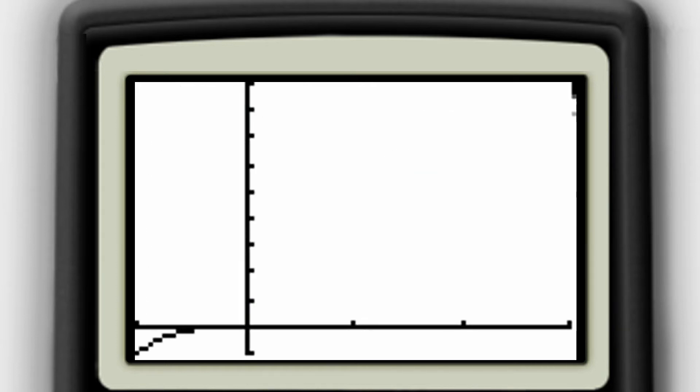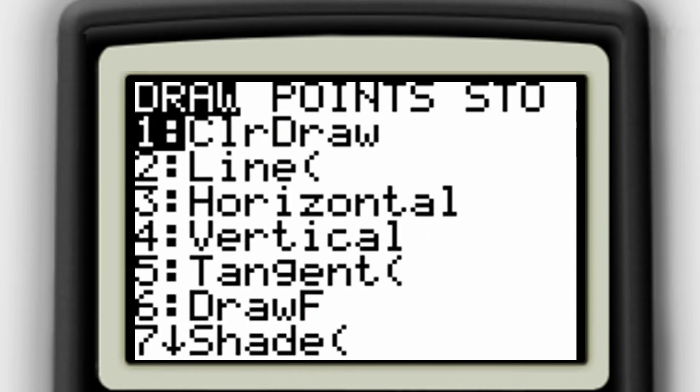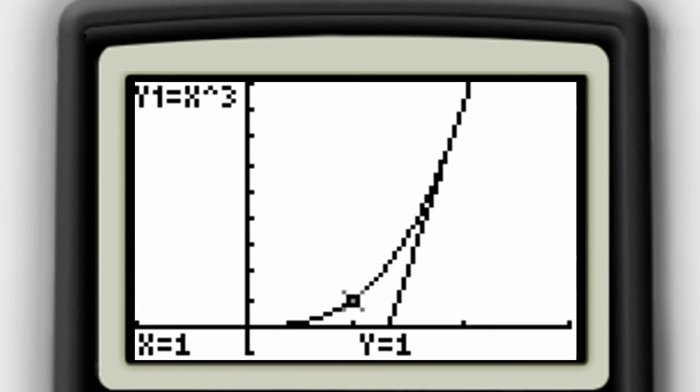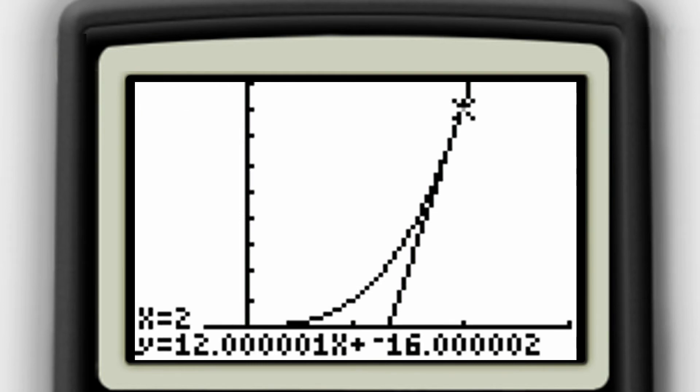Many graphing utilities also have a feature where you can draw in a tangent line. So if your utility has that feature, you can draw the tangent line at the point x equals 2. And when you do that, you'll notice that the tangent line is drawn, is going right on top of, or being drawn right on top of, 12x minus 16. Now,